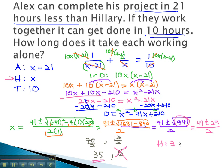Hillary does the job in 35 hours. Alex does the job in 21 hours less. 35 minus 21 equals 14 hours. And this completes our problem.